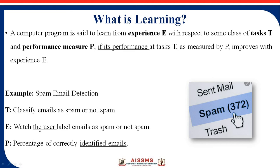Next is experience. Experience means that as per the classification, they assign a label to particular emails — whether that email is spam or not spam. They use those particular labels. And last is performance. Performance means the percentage of correctly identified emails — how accurately machine learning identifies whether a particular email is spam or not spam. So experience, task, and performance are the three main factors of learning.